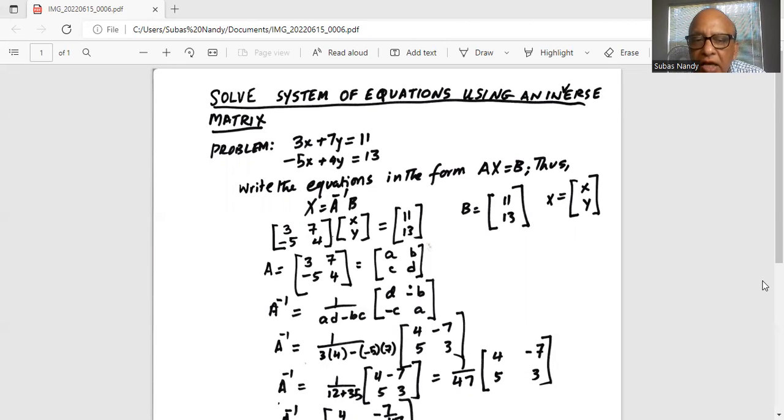The formula for A inverse for a 2 by 2 matrix is 1 over AD minus BC, which is the determinant. This is multiplied by the transformed matrix. We have to make some changes: for the first position, we write D.